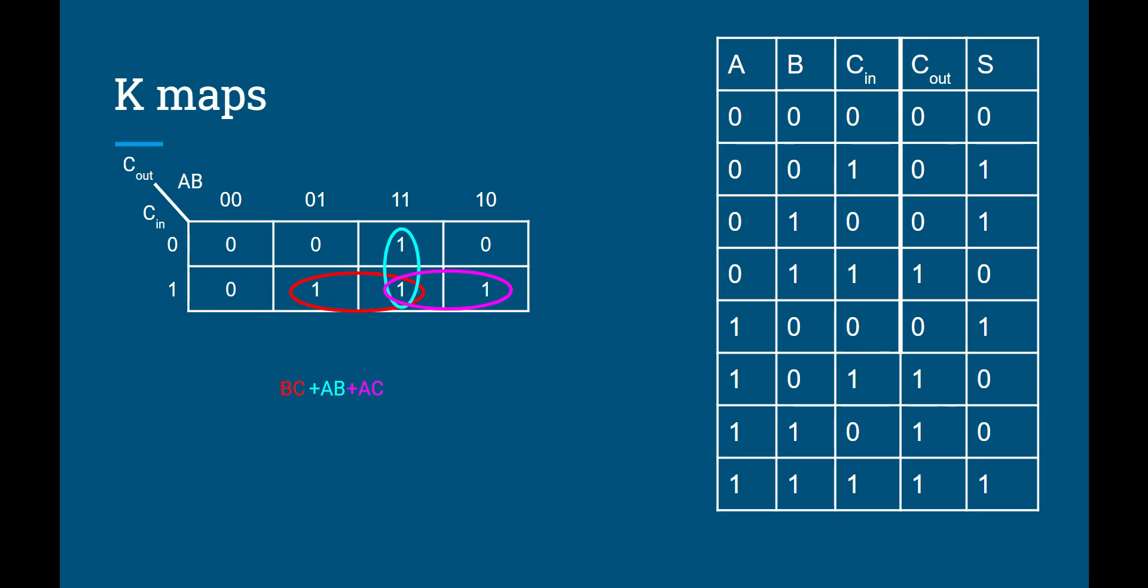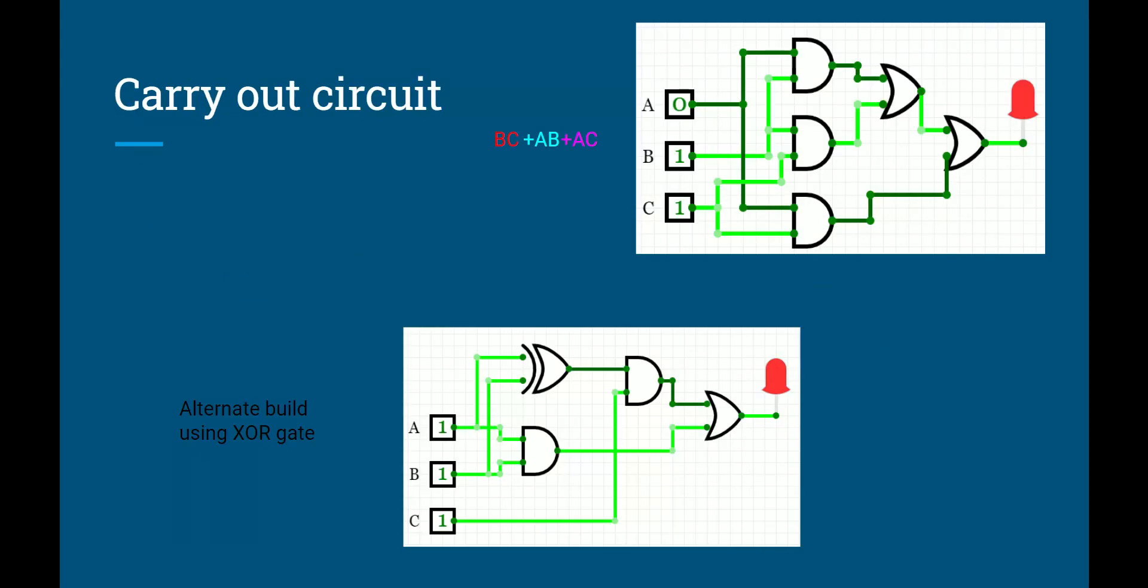So if we produce that as a circuit in Circuitverse, it would look a lot like our top right here. We would have our three AND gates. We would have our two OR gates to combine them all together. And that totally works. What I did on the bottom is produce another circuit that works. And it's slightly different because we're using an XOR gate. So you'll notice it's a little bit cleaner. We only have to use four gates instead of five gates.